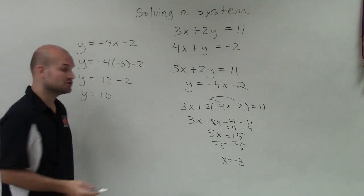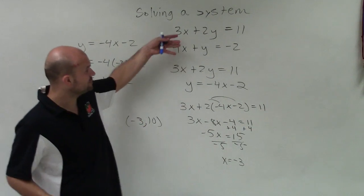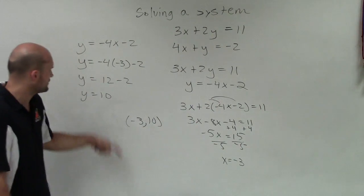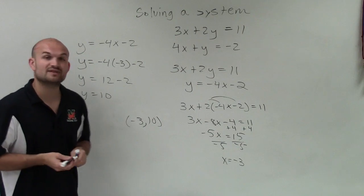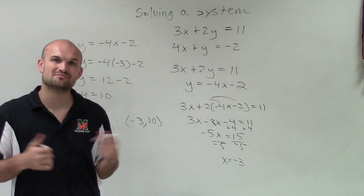Therefore, the solution as a coordinate point will be negative 3 comma 10. Meaning these two equations are going to be true for the x and y values when x equals negative 3 and y equals 10, and they will intersect at the coordinate point of negative 3, 10. There you go, ladies and gentlemen. That's how you solve a system using substitution. Thanks.